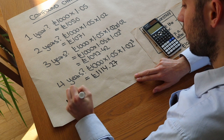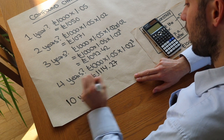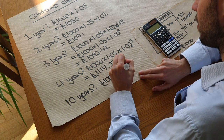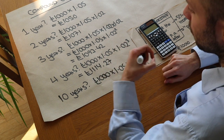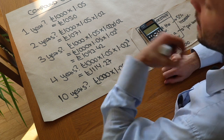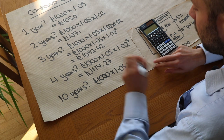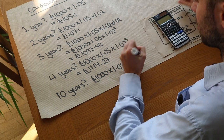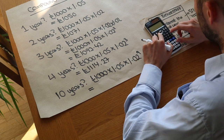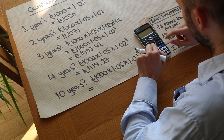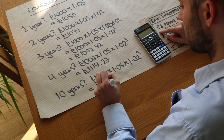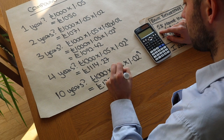What about after ten years? It's going to be a thousand times 1.05 for the first year, and then for the remaining nine years we're getting 2%, so we multiply by 1.02 to the power of nine. I can press the left key to modify what I wrote earlier and change the power to nine. That gives one thousand, two hundred and fifty-four pounds and eighty-five pence.